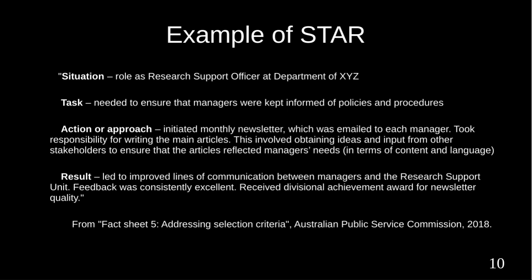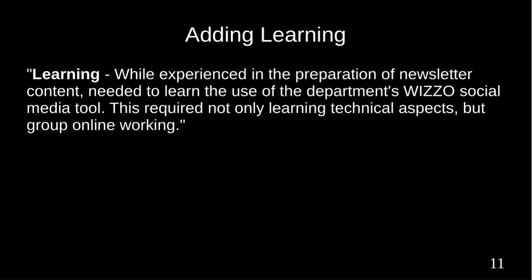An example of using STAR for the communication criterion: Situation — role as Research Support Officer at Department of XYZ. Task — needed to ensure managers were kept informed of policies and procedures. Action — initiated a monthly newsletter emailed to each manager, taking responsibility for writing the main articles, obtaining ideas and input from other stakeholders. Result — led to improved lines of communication between managers and the research support unit; feedback was consistently excellent; received divisional achievement award for newsletter quality.